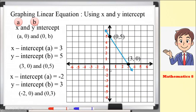Let's plot these two points. For (negative 2, 0): since x is negative 2, we move 2 units to the left — 1, 2. Since y is 0, our point stays at negative 2 on the x-axis. Next, for (0, 3): x equals 0, but y is positive 3, so we move 3 units upward — 1, 2, 3. That is our point for (0, 3). Connecting these two points forms the graph of the linear equation.